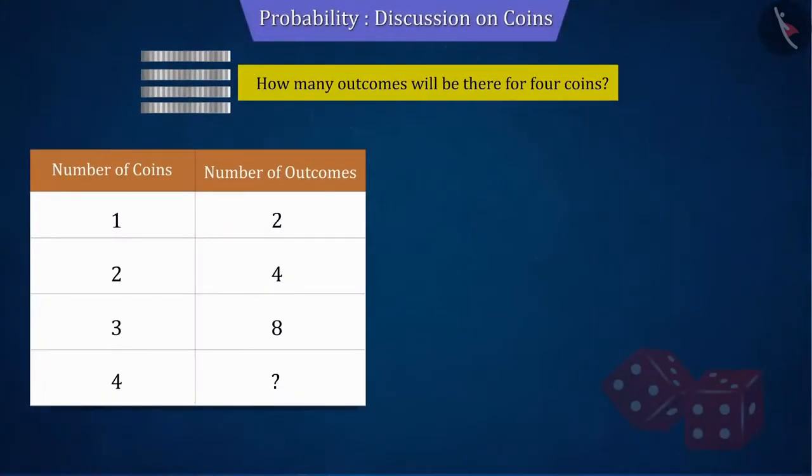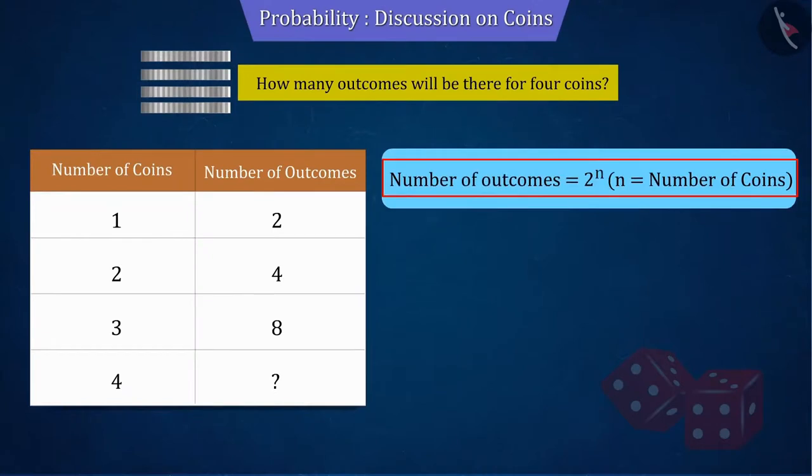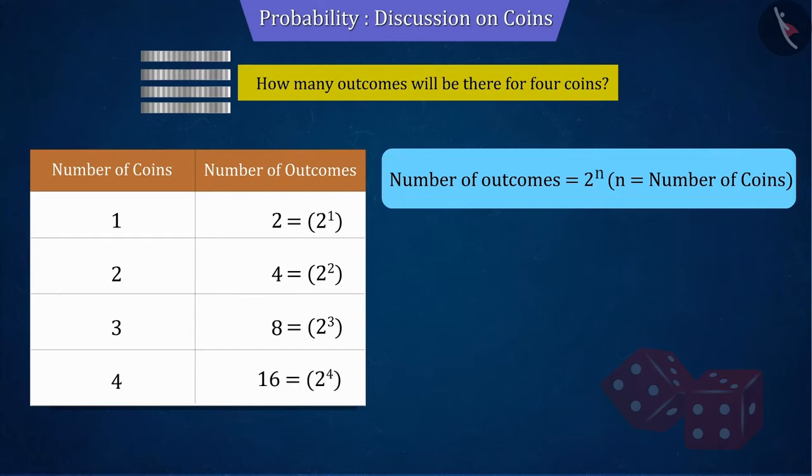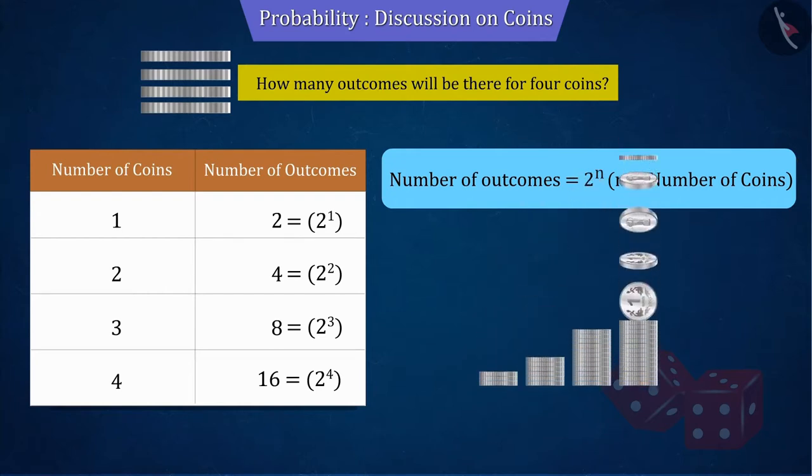Looking at the above patterns, we can say that the number of results obtained is in the form of 2 to the power of n, where n is the total number of coins. With the help of which, we can tell that four coins will have a total of 16 results. You can also use it to know the results of tossing more coins.